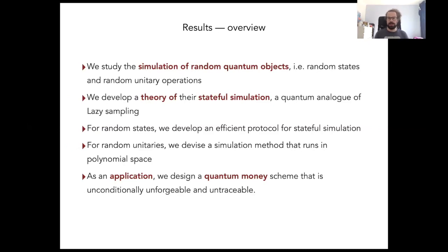Here's an overview over our results. In this work we study the simulation of random quantum objects like random quantum states and random unitaries, and we develop a theory of stateful simulation for these random objects. This is a quantum analog of the well-known lazy sampling technique. For random quantum states we can do this efficiently, and for random unitaries we can at least do it in polynomial space. As an application of the state version, we develop a scheme for quantum money that is unconditionally secure and both unforgeable and untraceable — so that's privacy-preserving in some sense.